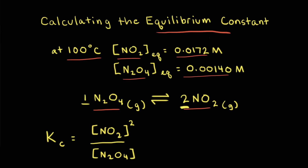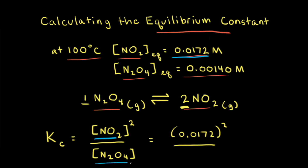Next, we plug in our equilibrium concentrations. The equilibrium concentration of NO2 is 0.0172, so this is equal to 0.0172 squared, divided by the equilibrium concentration of N2O4, which was 0.00140.